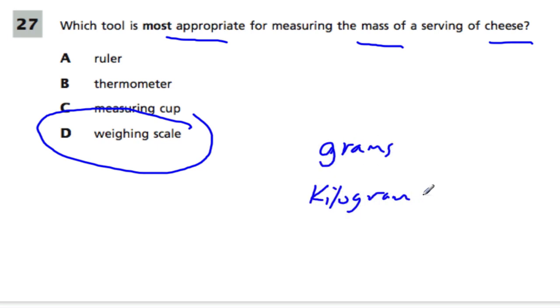Remember, kilograms are a thousand grams each, so grams measure everyday objects that we can handle and hold without too much difficulty, whereas kilograms measure these huge things, and milligrams measure one one-thousandth of a gram, so small things.